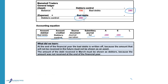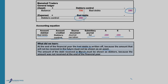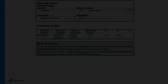What did we learn? At the end of the financial year, bad debts must be written off because the amount will not be received in the future, so you are not allowed to show it as an asset in your balance sheet. The amount of debt that will only be received in March can still be shown as a debtor at the end of the year, because it is still an asset — the amount will be received in the beginning of the next financial year.